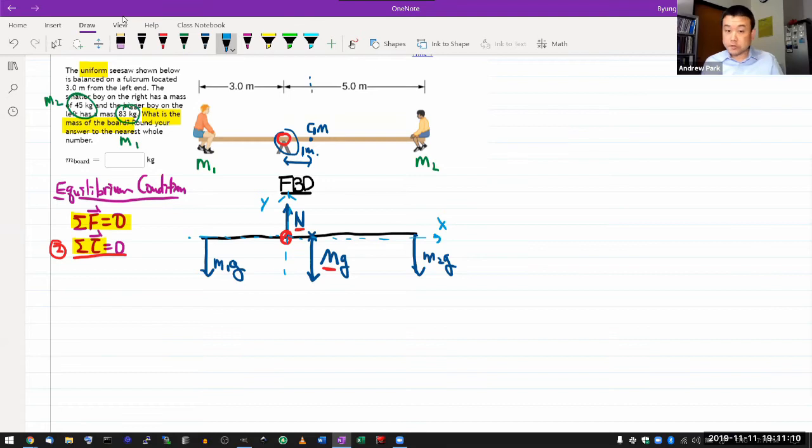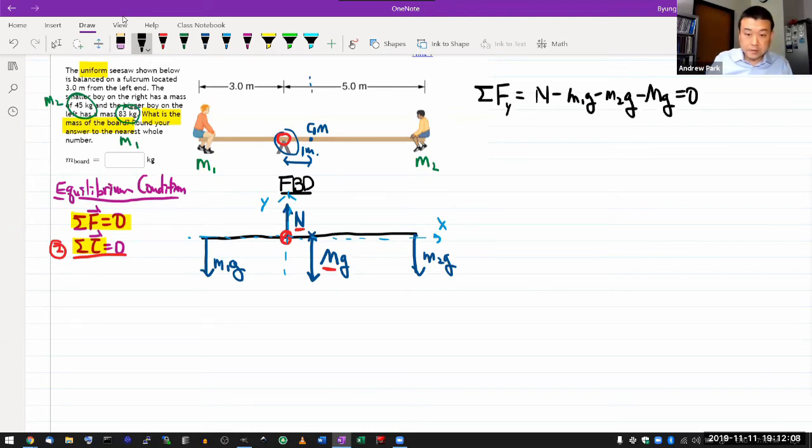Step number three, decompose the force vectors into x and y components here. I don't need to. Everything is just in the vertical direction along the y axis. So all that's remaining is step number four. Write down Newton's second law equations. So technically, I will write down the net force equation along the y direction. So the normal force minus the other normal forces, m1g minus m2g and the gravitational force on the seesaw minus mg. That should add up to zero. And my feeling is that probably won't end up using that equation. So now that we are dealing with the rotation, when I say Newton's second law equation, it includes the translational and rotational versions of it. The rotational version involves the net torque.